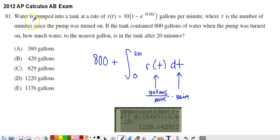It's one where we're told water is pumped into a tank at a rate given by R of T. R of T is measured in gallons per minute. T is the number of minutes since the pump was turned on. If the tank contained 800 gallons of water when the pump was turned on, how much water to the nearest gallon is in the tank after 20 minutes?